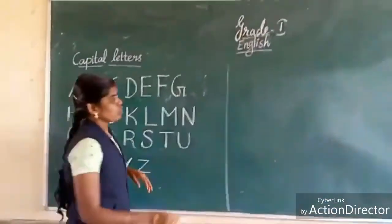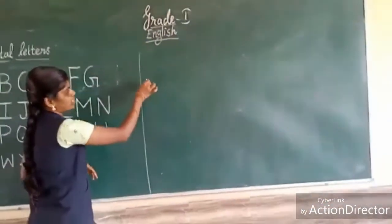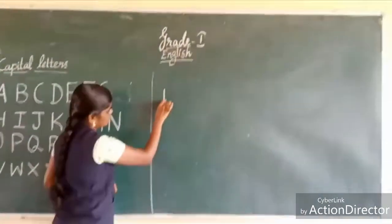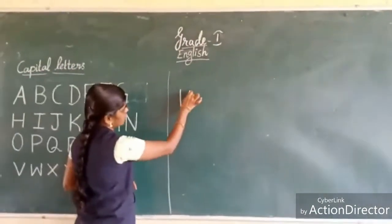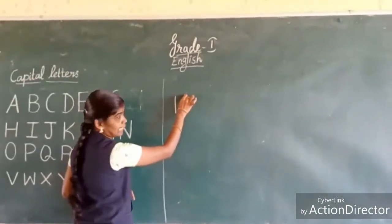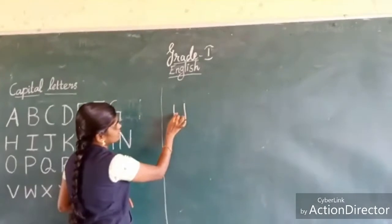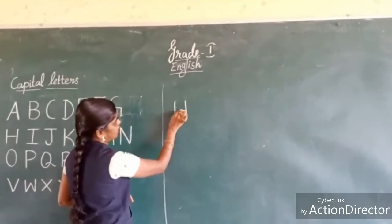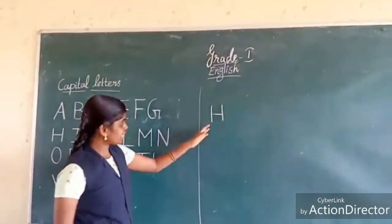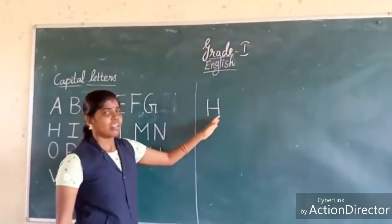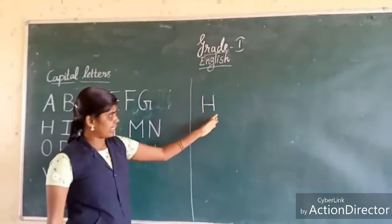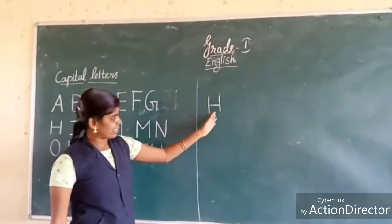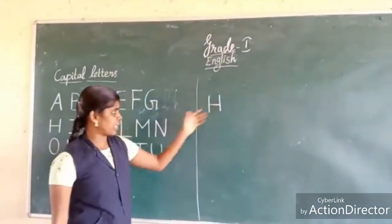We are going to write H. How to write H? One standing line, another one standing line, and in the center one sleeping line. This is H.